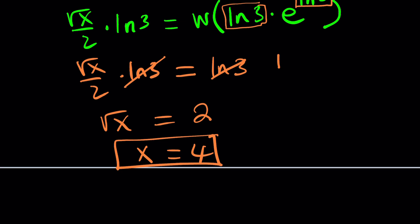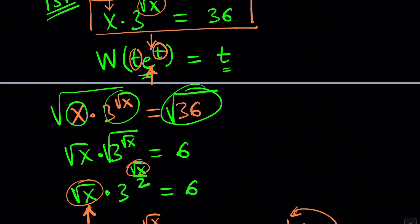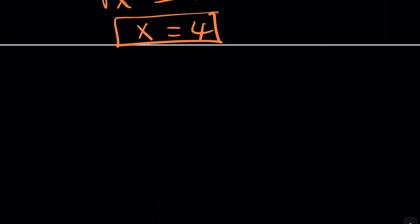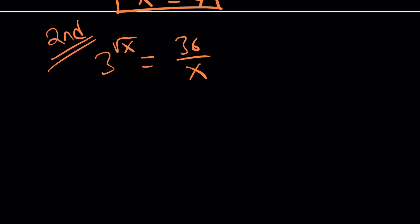We only got one solution — does that mean there's only one solution? Let's take a look at the second method and the graph as well, to make sure we're on the right track and not missing anything. Remember the original equation? We're going to use a different approach — guess and check.